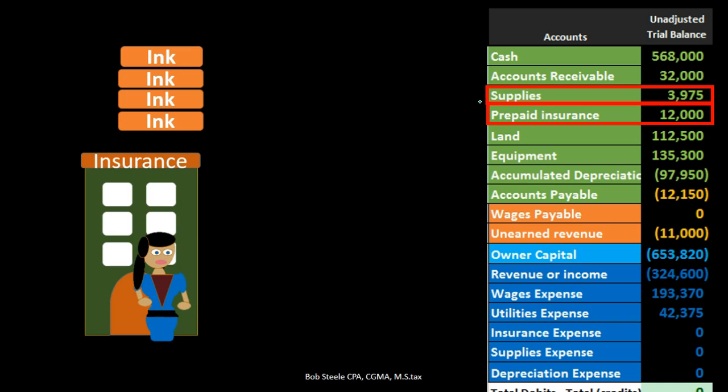We could have something like insurance expense, which is another one that almost always needs an adjusting entry. We're going to set up the system to record insurance payments as an asset rather than insurance expense. So when we make the payment it's going to be recorded to prepaid insurance rather than insurance expense. Then at the end of the time period we determine how much of the policy has expired, reduce the prepaid insurance by that amount, and record the related expense — insurance expense.